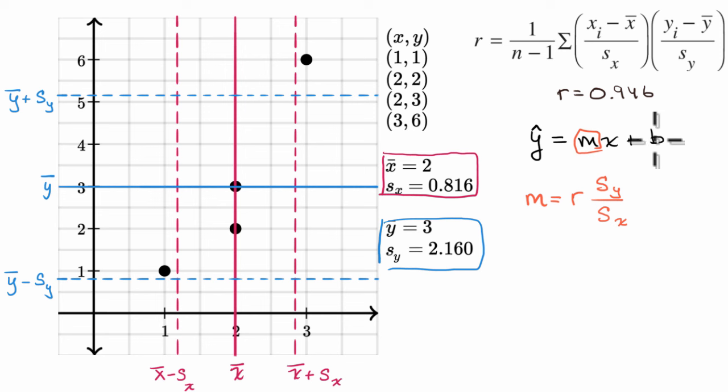Well, like you first learned in Algebra 1, you can calculate the y-intercept, if you already know the slope, by saying, well, what point is definitely going to be on my line? And for a least squares regression line, you're definitely going to have the point sample mean of x comma sample mean of y. So you're definitely going to go through that point.